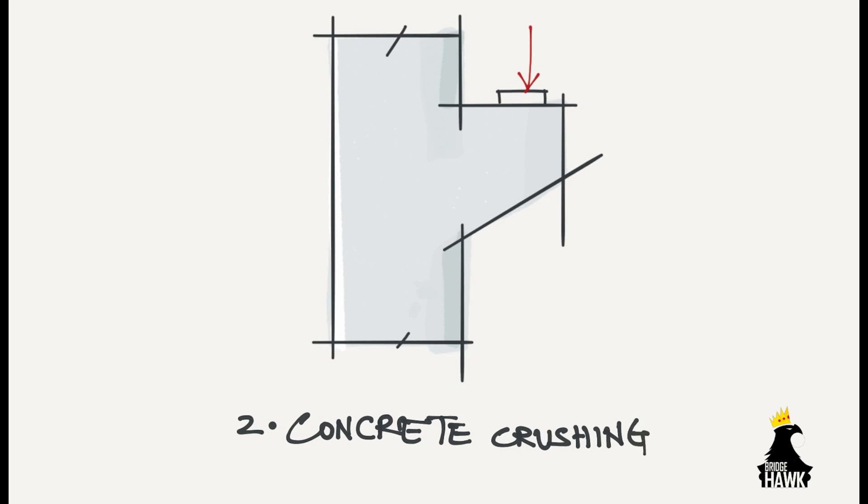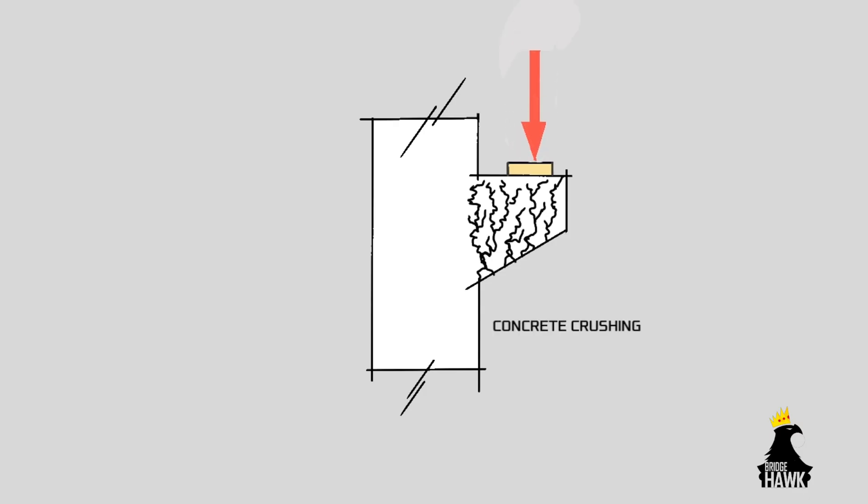Concrete crushing from the strut portion. This failure is caused mainly due to the inadequate design of the concrete. Since the concrete cannot bear the large compressive forces, gradual cracking takes place from the bottom as shown. Eventually, the entire corbel section crumbles and the member collapses.